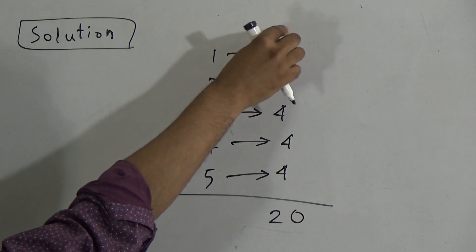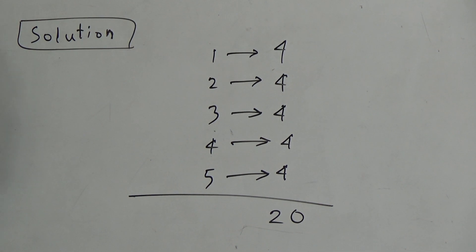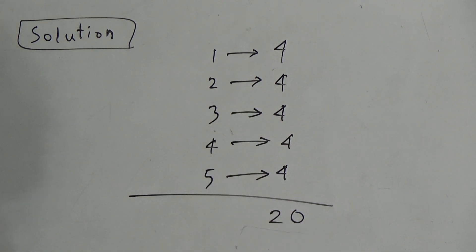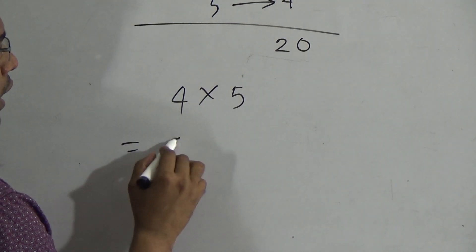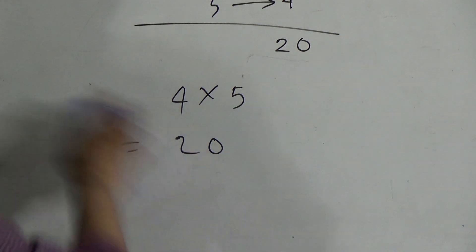If we add these five fours, we can get it. But you know that multiplication is the short process of addition. So we need not add these five fours. If we use multiplication — 4 by 5 — then we can easily get 20. So we have to multiply 4 by 5 to get the answer.